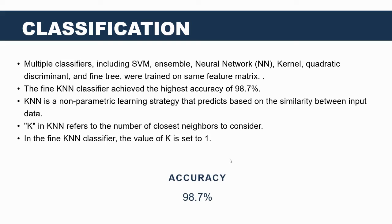Next comes the classification stage. To classify the NMDs, we trained various classifiers using 10-fold cross-validation, including Support Vector Machine (SVM), ensemble methods, neural networks, and more. Remarkably, the K-Nearest Neighbor (KNN) classifier emerged as the most effective, achieving an accuracy of 98.7%. The KNN's non-parametric, distance-based approach and its adaptability to complex data distributions made it an optimal choice for NMD classification.